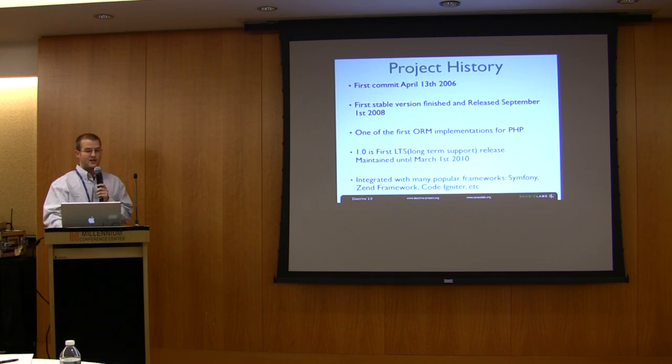Some history about the project itself. Doctrine was started on April 13, 2006, or at least that was when the first commit was made. We released the first stable version on September 1, 2008, about two years after it was started. So a lot of development and time went into the project before we actually had a first stable version.